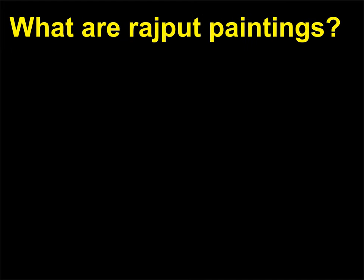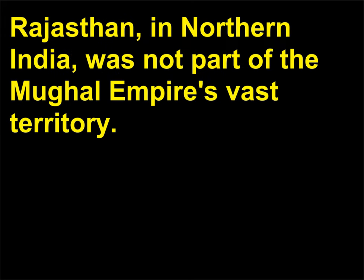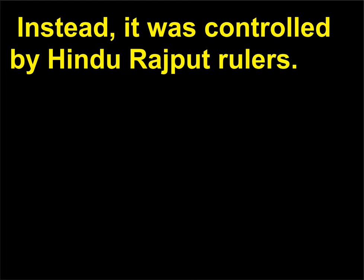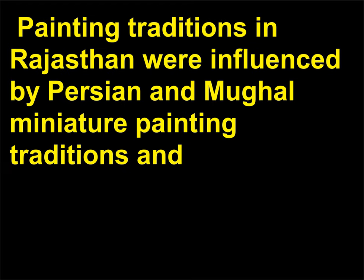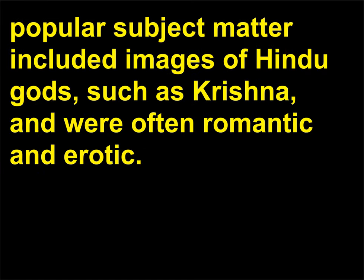What are Rajput paintings? Rajasthan, in northern India, was not part of the Mughal Empire's vast territory; instead, it was controlled by Hindu Rajput rulers. Painting traditions in Rajasthan were influenced by Persian and Mughal miniature painting traditions, and popular subject matter included images of Hindu gods such as Krishna, and were often romantic and erotic.